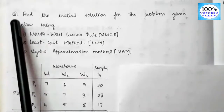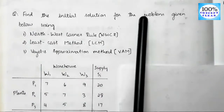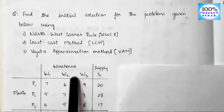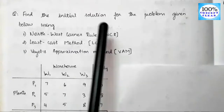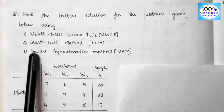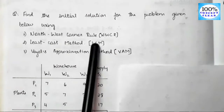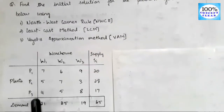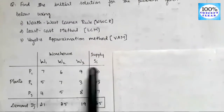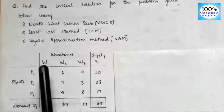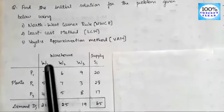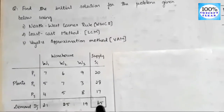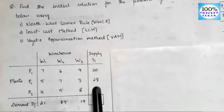Now let's see the question: find the initial solution for the problem given below using this method. There are three methods used to get the initial solution. Looking at the matrix, there are three plants with supply values, and three warehouses with demand values. The total demand and supply is 65.